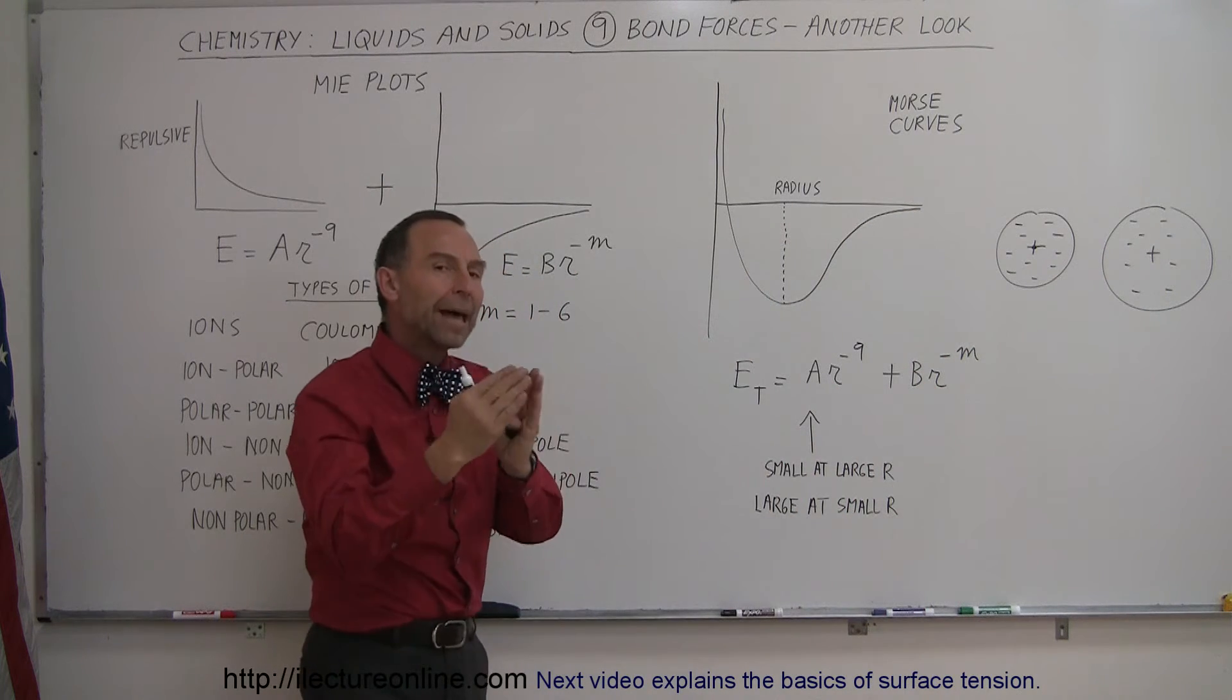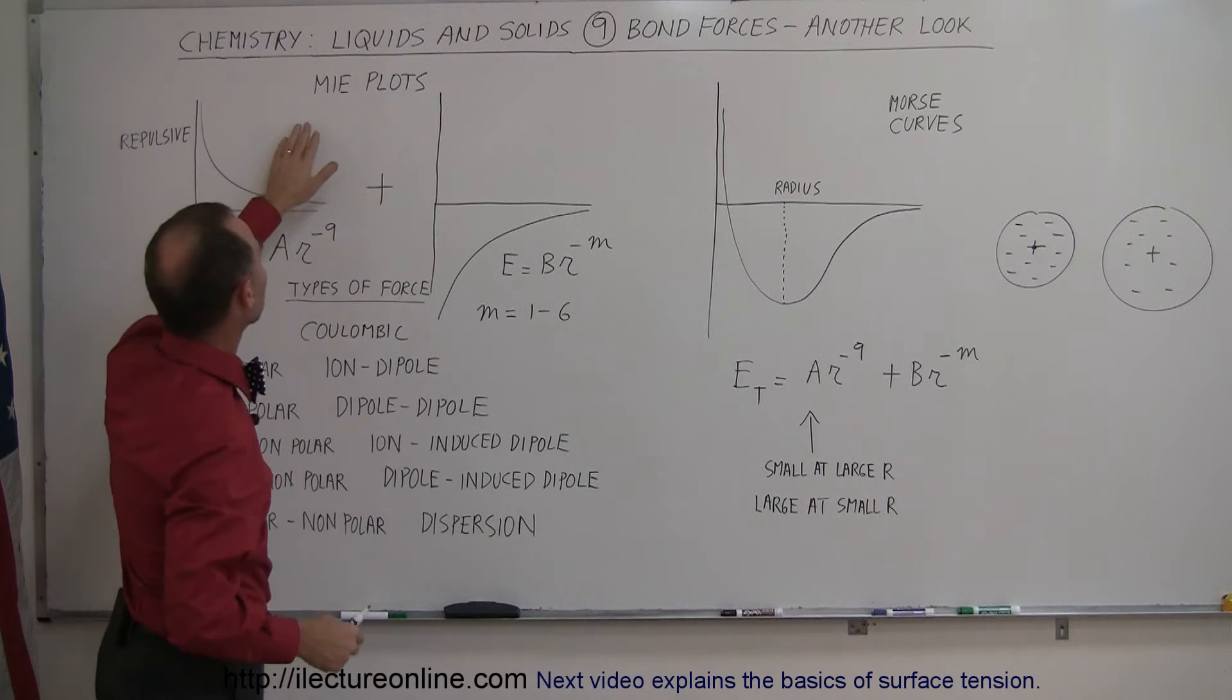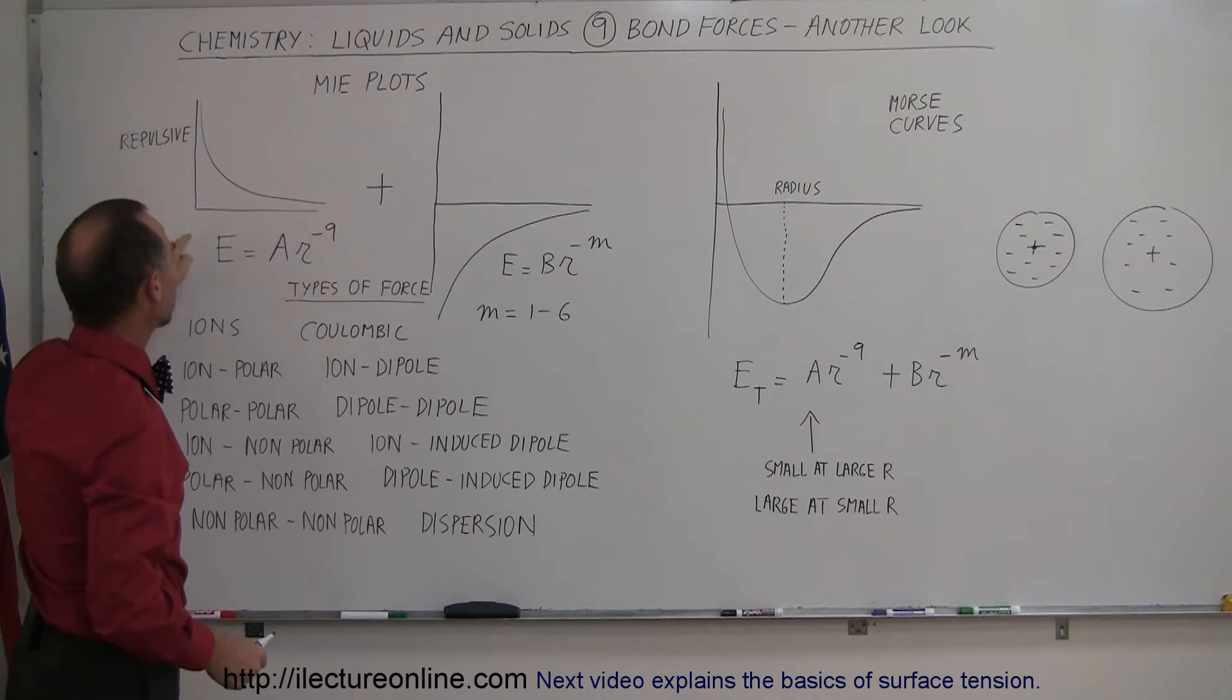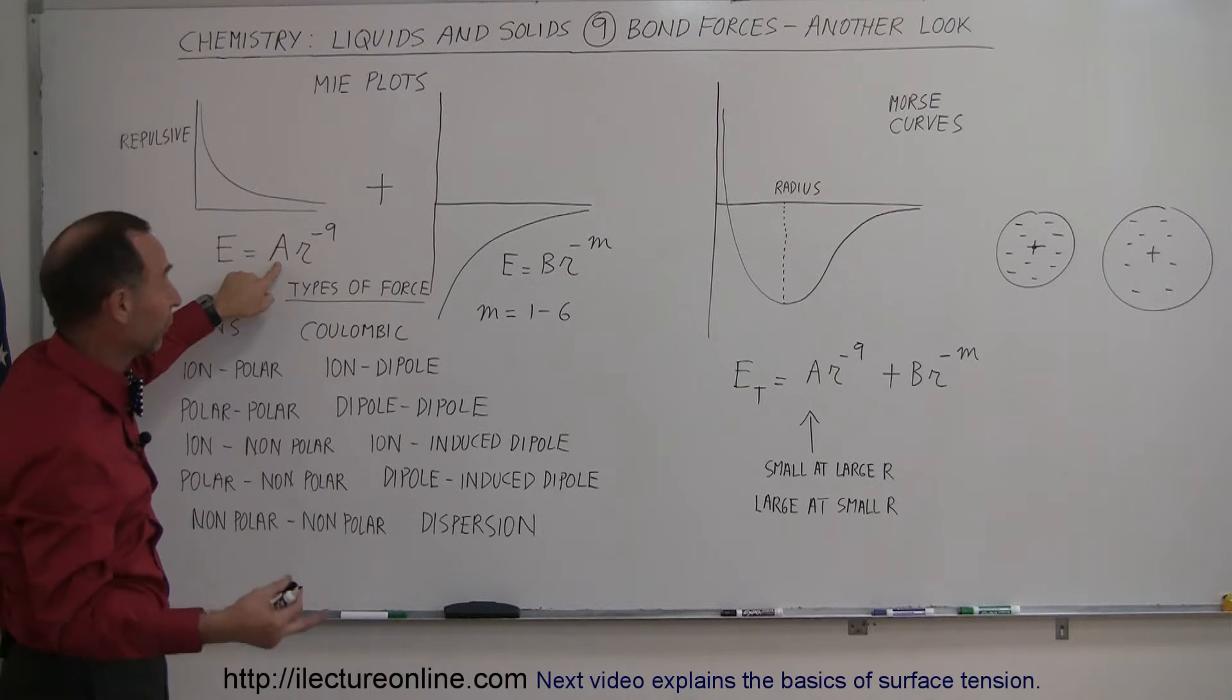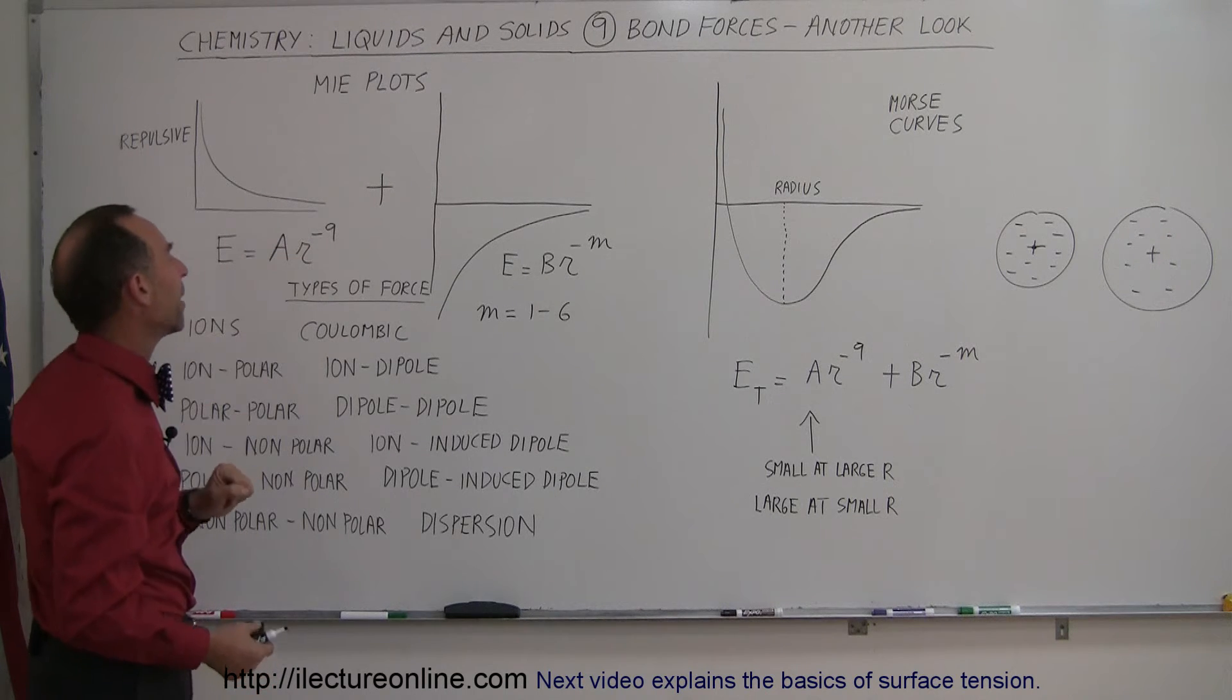So what I've tried to do here is come up with these two plots, they're called ME-plots. And we have repulsive forces versus distance, and the general equation is that the energy is equal to some constant, depending upon what atom or molecule we're dealing with, times the radius to the minus 9 power.